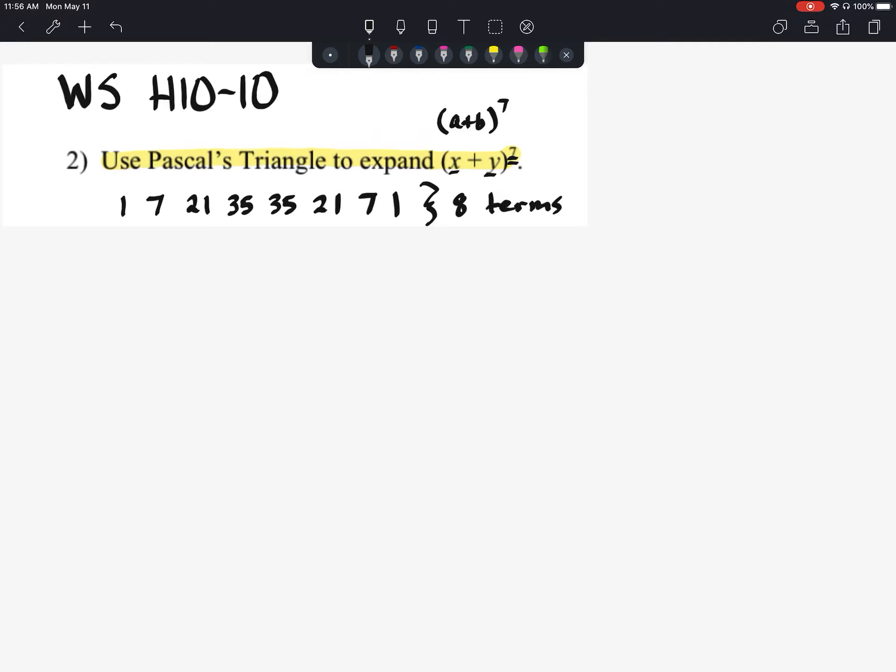We'll say here we're going to have our coefficient of 1 times something plus 7 times something plus 21 times something, 35, 35, and then we'll have a second 35 as we work our way back down. So 35 plus 21 plus 7 plus 1.